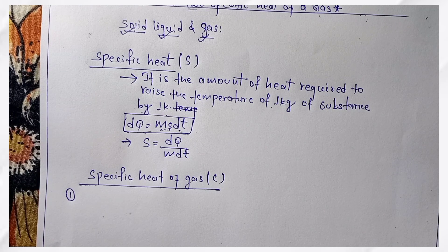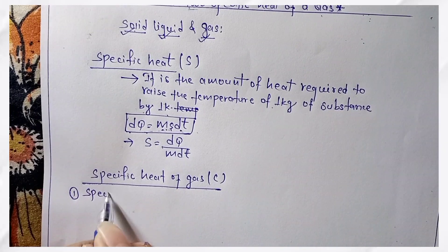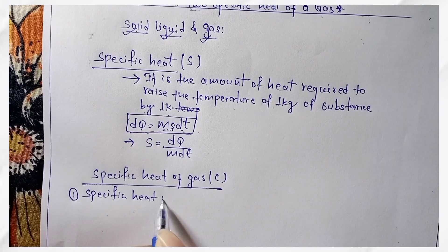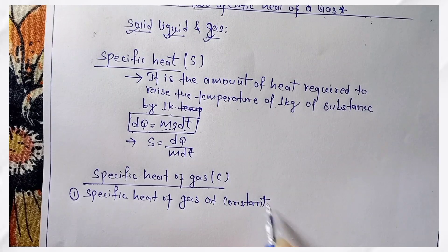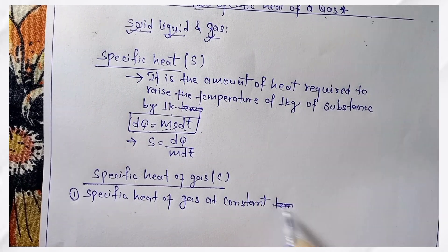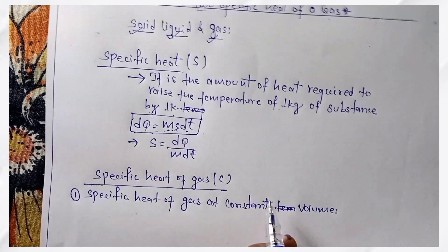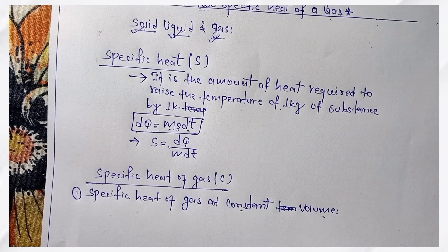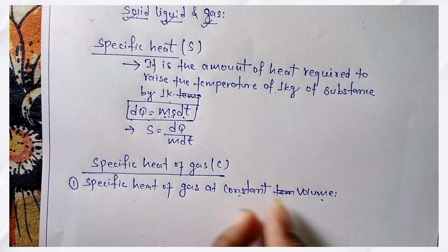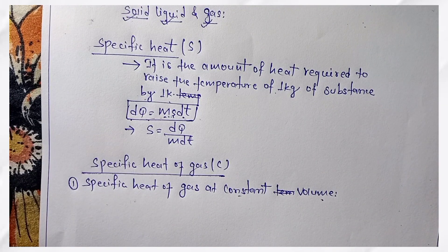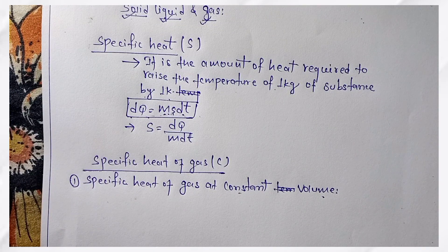These two types are: specific heat at constant pressure, and specific heat at constant volume. So these are the two specific heats of gas — one at constant temperature/volume, and one at constant pressure.